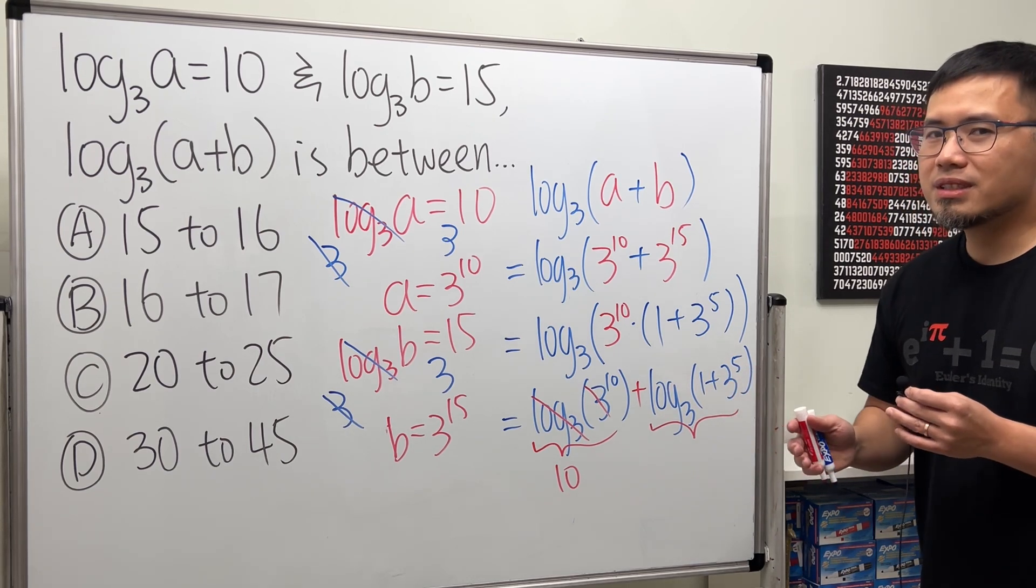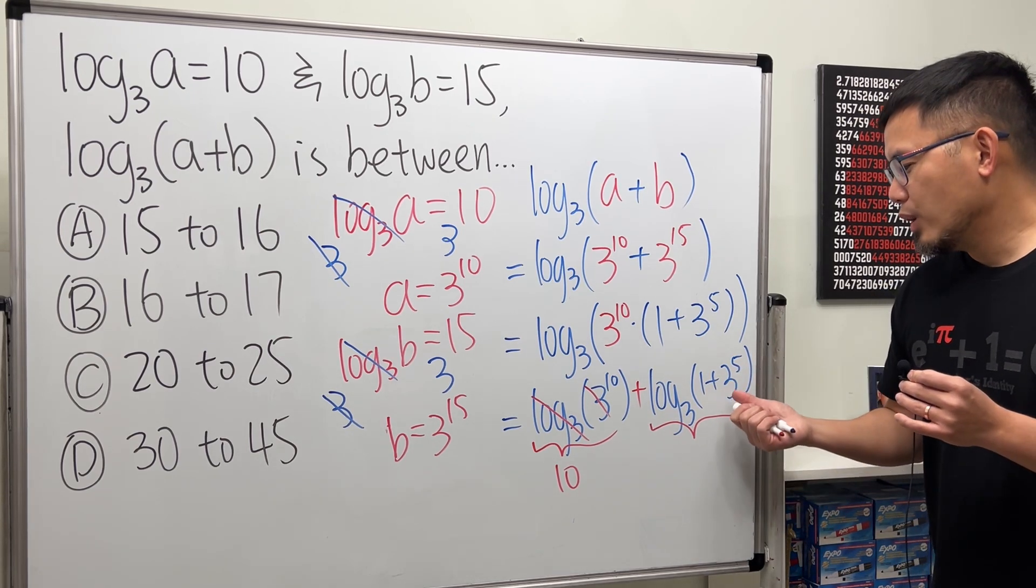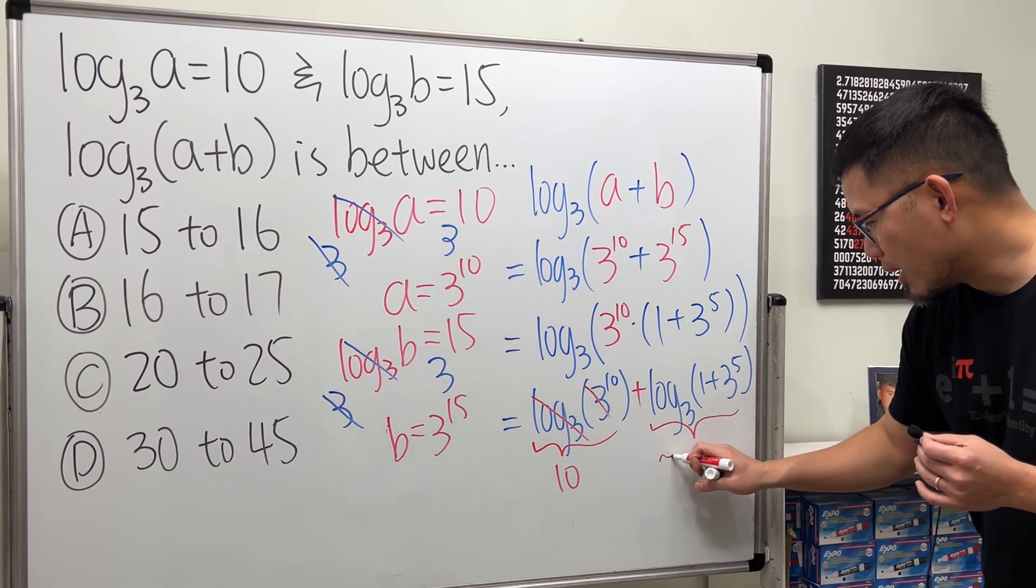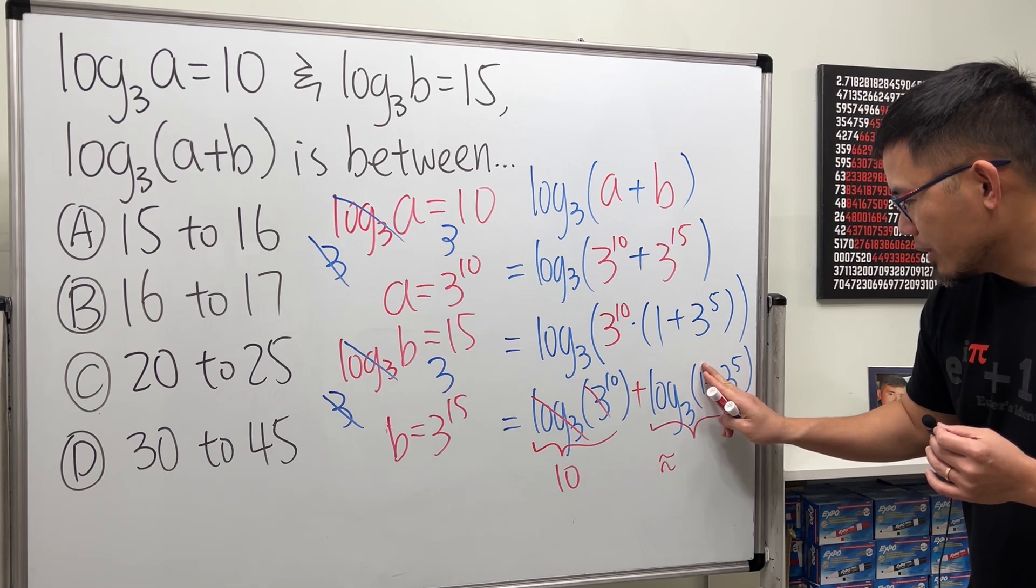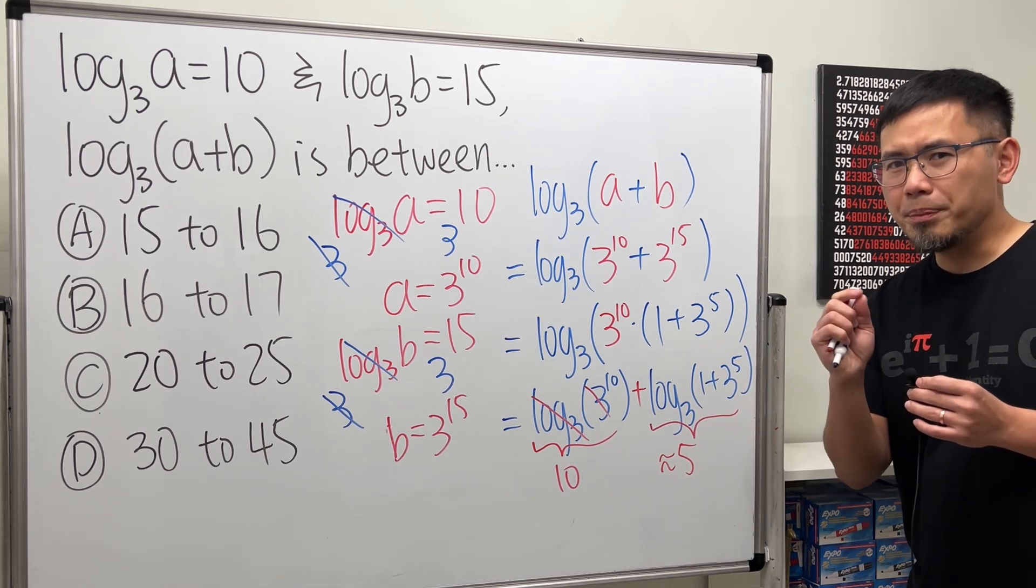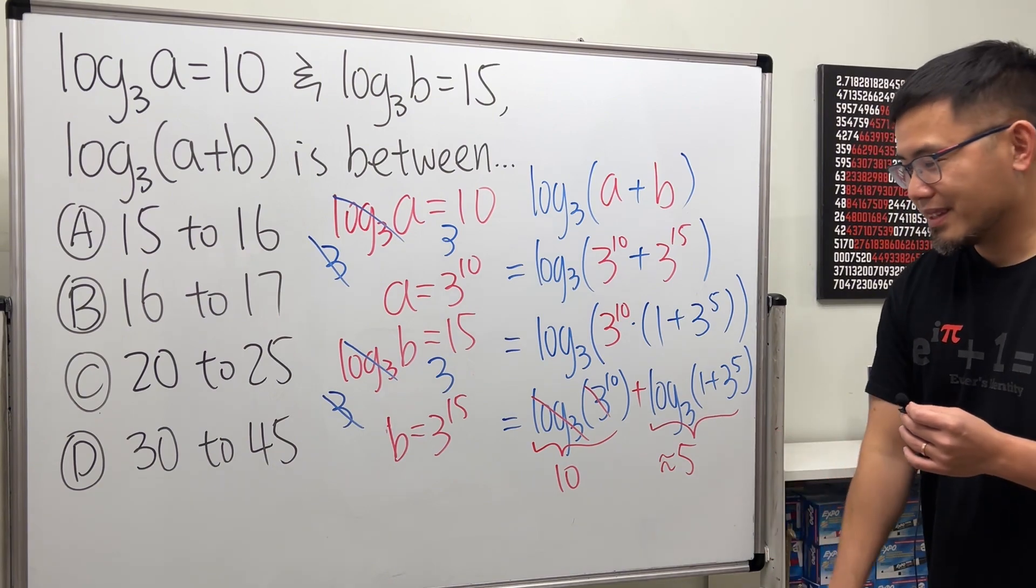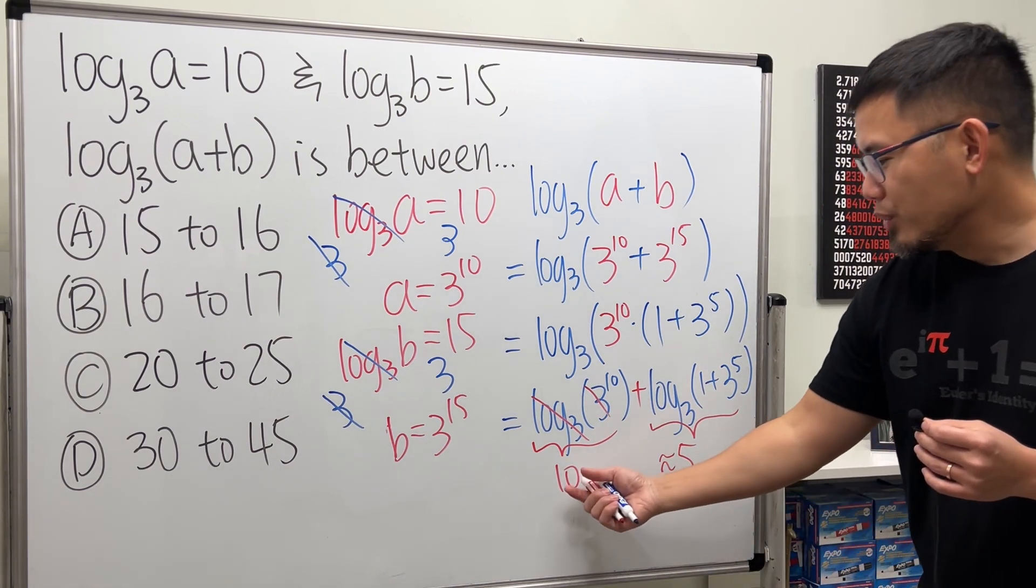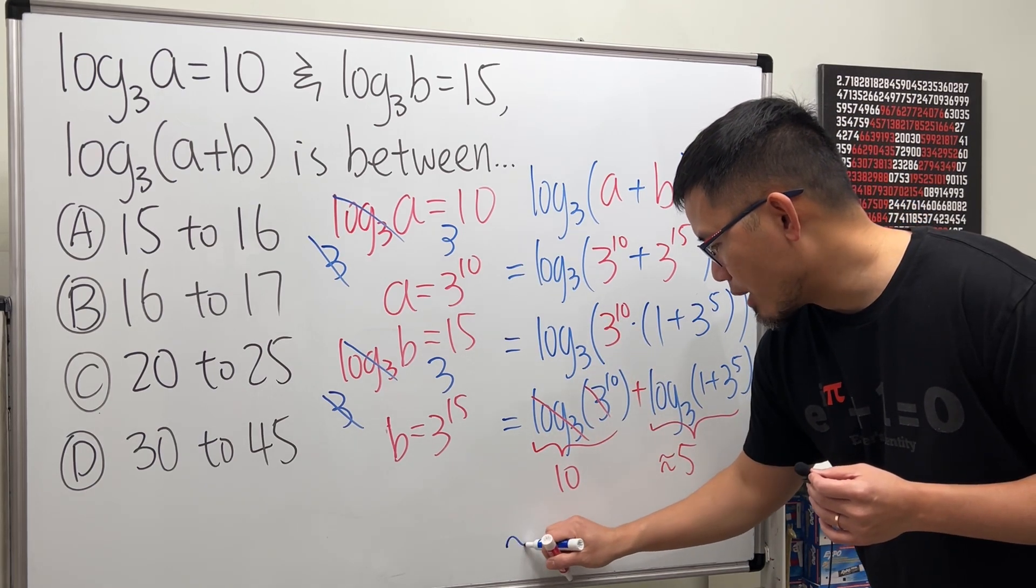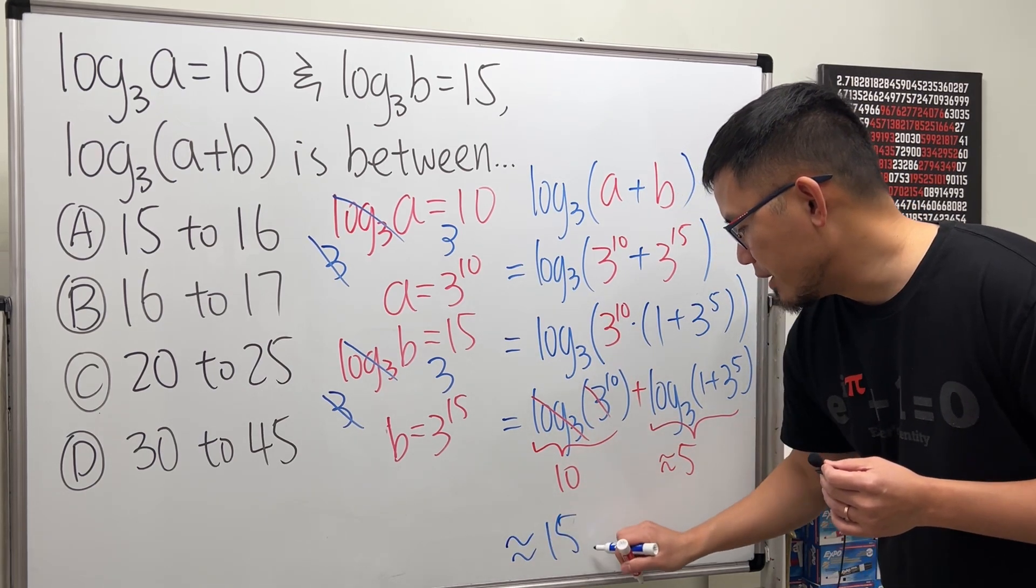But 3 to the 5th is a pretty big number. When you add 1 to it, the 1 doesn't really matter. You know, this right here will be approximately, just ignoring the 1, you'll get like 5 point something, right? A little bit bigger than 5. So in fact, when you have 10 plus something that's approximately equal to 5, you can say, this is approximately equal to 15 something.